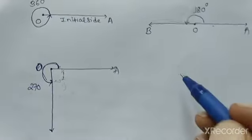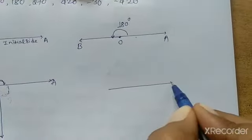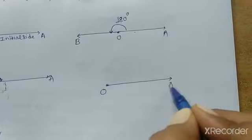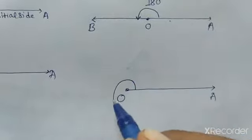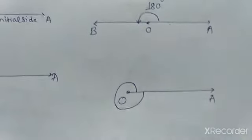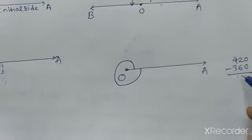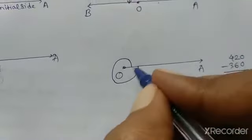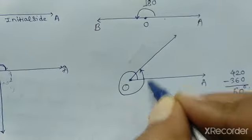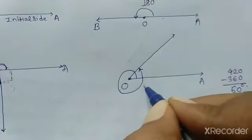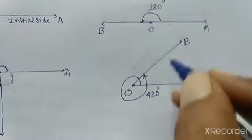Next, 420 degrees: with initial side OA, it first completes 360 degrees, and the remaining angle is 420 − 360 = 60 degrees. So the terminal side will be at 60 degrees beyond a full rotation, making the total 420 degrees.